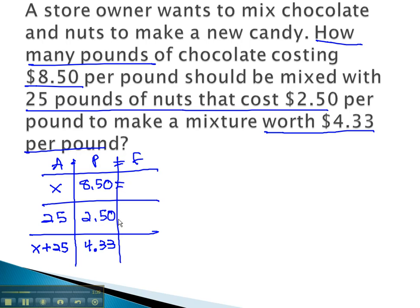We can now calculate our finals by multiplying the amount times the part, giving us 8.5x. 25 times 2.5 is 62.5. And finally, when we distribute, multiplying the amount through, we get 4.33x plus 108.25.